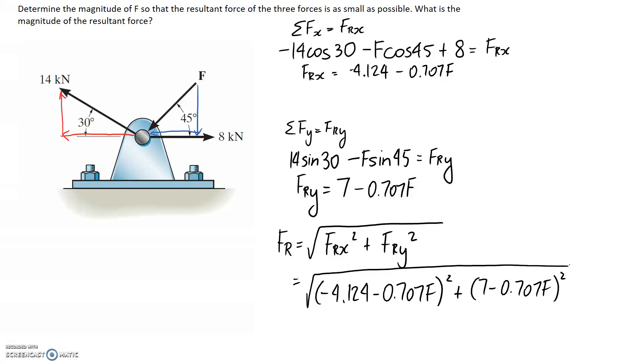Alright, so now what we need to do is minimize this equation, and to make it a little bit easier for that process, you can expand all this stuff inside the square root. You don't have to, but I think it makes it a little bit easier, and I'm not going to show that process, it's a little bit lengthy, but this is what you should end up with if you choose to do that. It just makes it a little bit nicer. So this here is the equation for fR that we need to minimize.